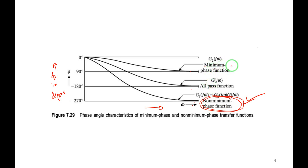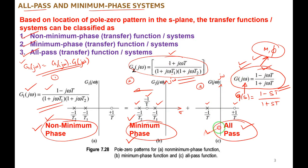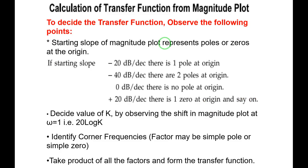We will concentrate only on minimum phase systems and all-pass systems. These are classified based on the location of their roots. If anyone has doubts, please unmute and ask. I hope you understood the difference between the three types: non-minimum phase, minimum phase, and all-pass systems, classified based on the pole-zero pattern. Next topic: calculation of transfer function from the magnitude plot, also called experimental determination of transfer function.